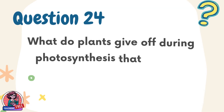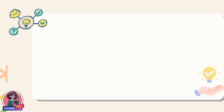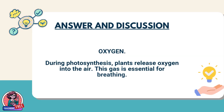Question 24. What do plants give off during photosynthesis that animals need? Answer: Oxygen. During photosynthesis, plants release oxygen into the air. This gas is essential for breathing.